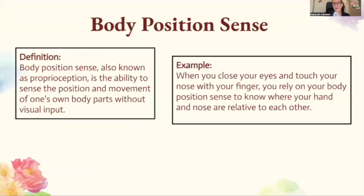Let's start with body position sense. Body position sense, also known as proprioception, is the ability to sense the position and movement of one's own body parts without visual input. So when you close your eyes and touch your nose with your finger, you rely on your body position sense to know where your hand and nose are relative to each other.